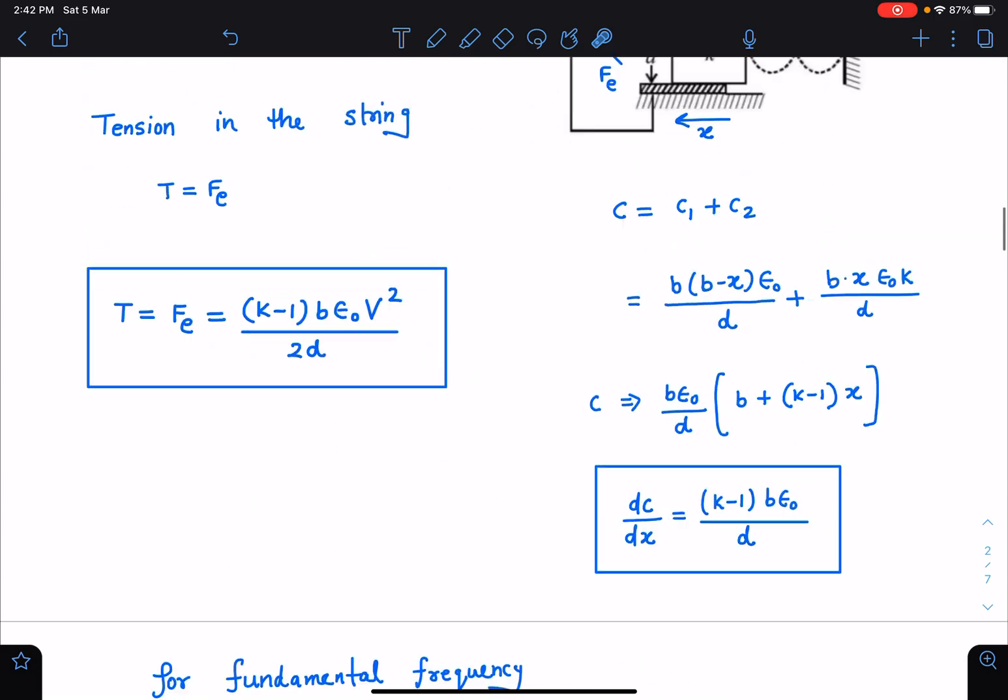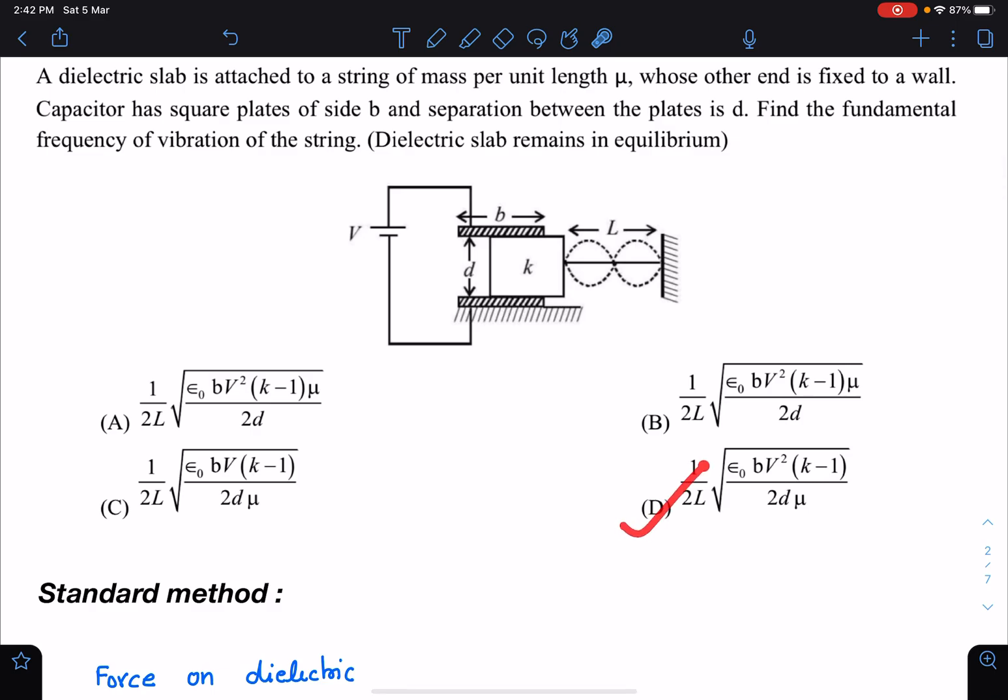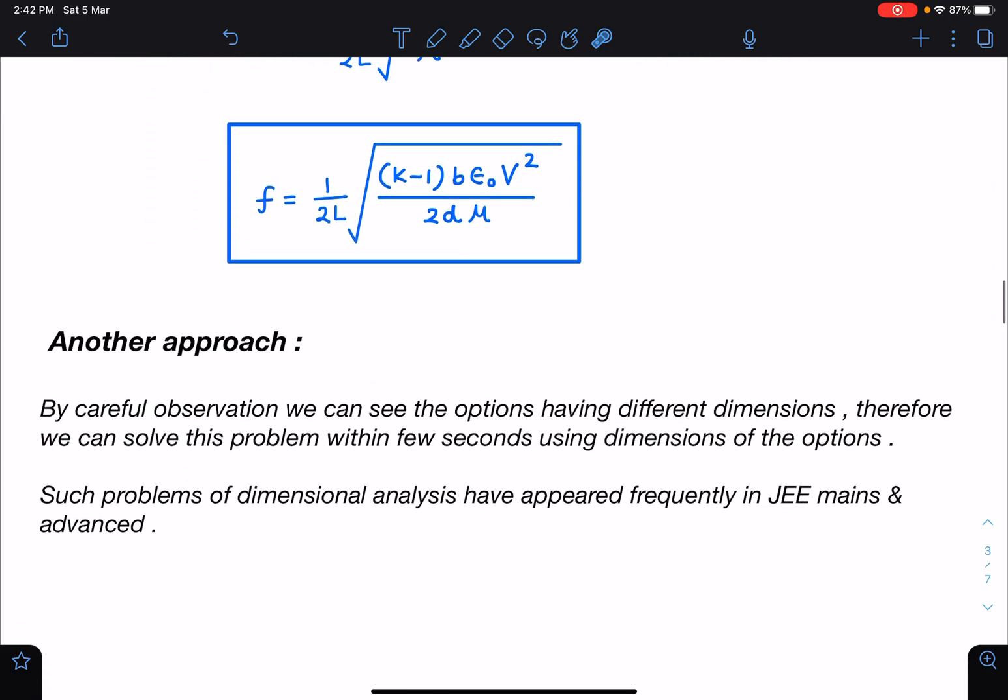When I substitute these values I am getting f as 1 by 2l times square root of (k minus 1) b epsilon naught v squared by 2d mu. If you check here, answer is d part for this.